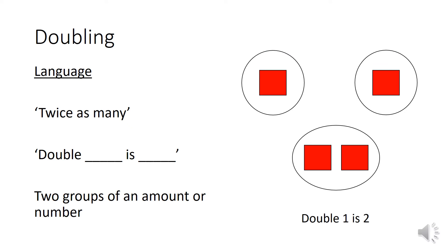Let's recap our previous learning from the last video. We looked at the language we use when talking about doubling. We might say things like 'twice as many' — we have twice as many of a number or amount. We might say 'double one is two.' Doubling is two groups of an amount or number, as shown with one square here and one square there.